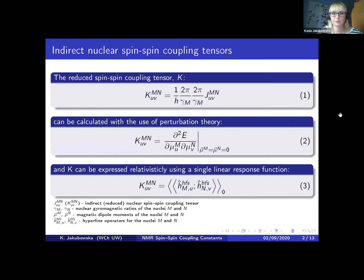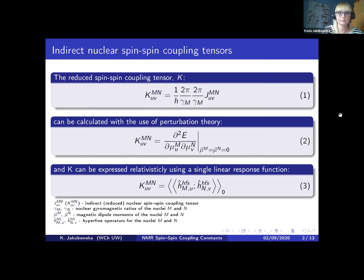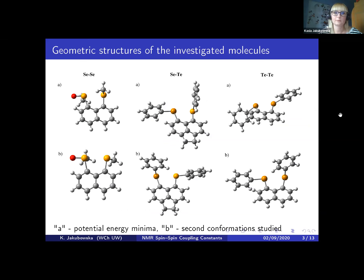Let's start with some theory. The NMR indirect spin-spin coupling constant arises from an interaction between the nuclei mediated by the electronic structure, which is perturbed by the magnetic moments of the nuclei involved. The reduced spin-spin coupling constant is usually computed with perturbation theory as the change in electronic structure due to the magnetic field induced by the nuclear moment. At the relativistic approach, the spin-spin coupling tensor can also be expressed in terms of linear response theory using a single linear response function.